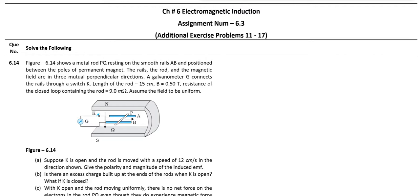The question is: Figure 6.14 shows a metal rod PQ resting on smooth rails A and B, positioned between poles of permanent magnets. The rails, the rod, and the magnetic field are in three mutually perpendicular directions. A galvanometer G connects the rails through a switch key.